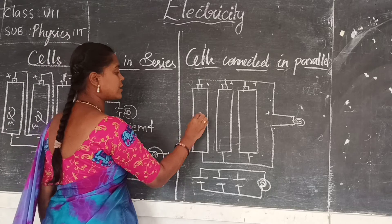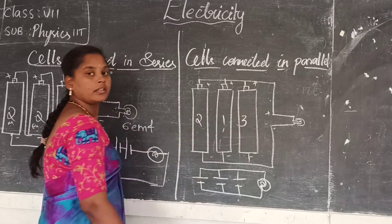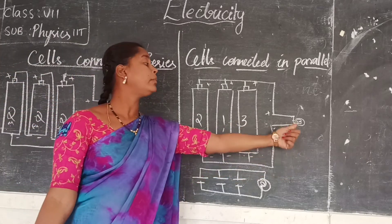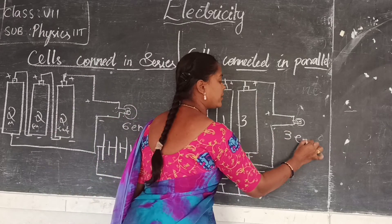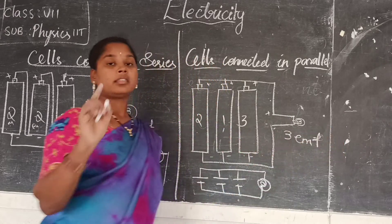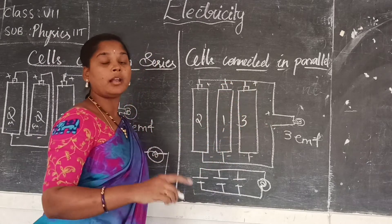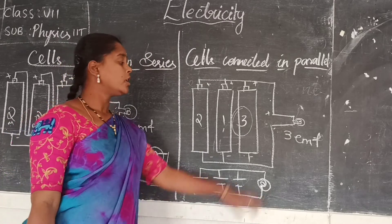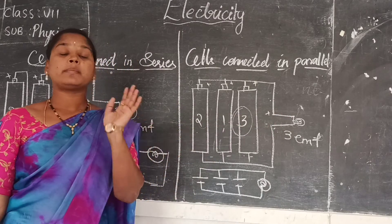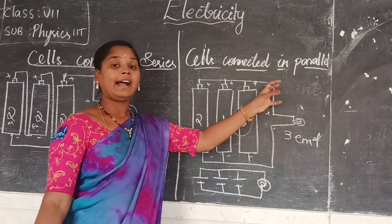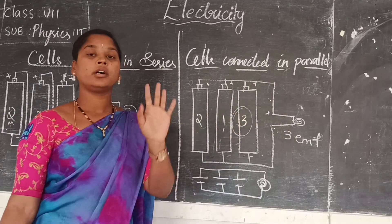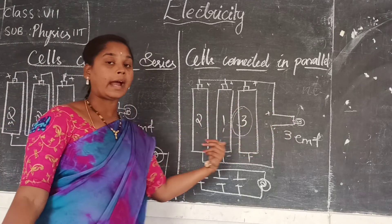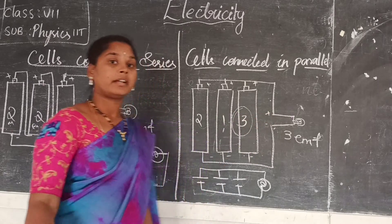Whereas if we take cells in parallel — if the EMFs are 2, 1, and 3 — how much does the bulb get? It will not be 6; it will be 3 EMF. Why? Because when connected in parallel, the bulb takes only the highest EMF. Here 3 is the highest EMF, so it takes only 3 EMF — 3 electromotive force. In parallel, the EMFs are not added; only the highest EMF is used.